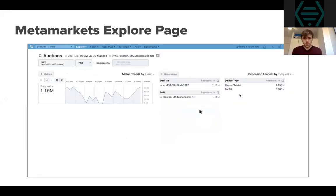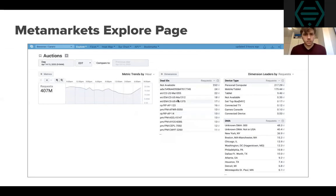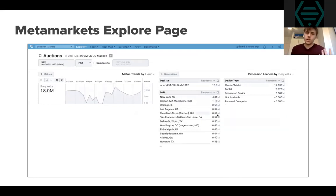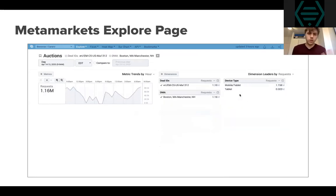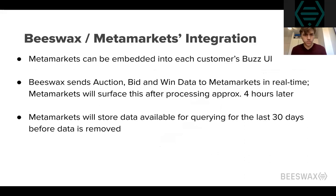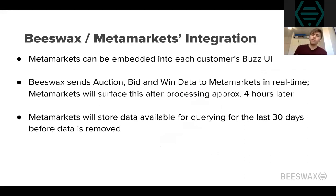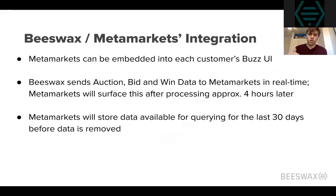I'll spend just a second on this slide to give people a brief overview of what it looks like. On the left side you've got your line graph, and then you've got a bunch of dimensions on the right side. The integration embeds that view into each customer's Buzz UI. Our existing customers: you just go to the Tools section in the top right corner of the UI, and then there should be a Metamarkets dropdown.